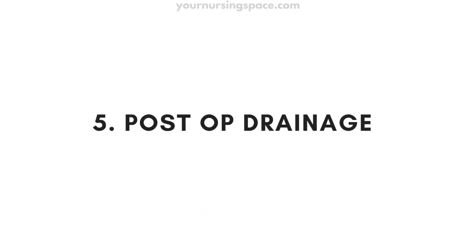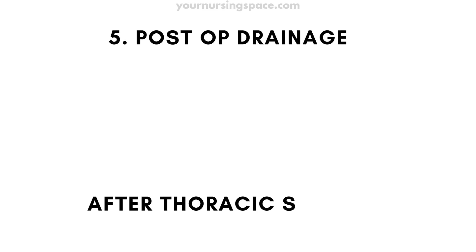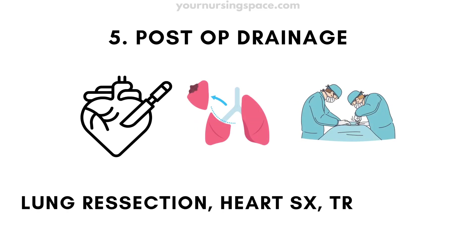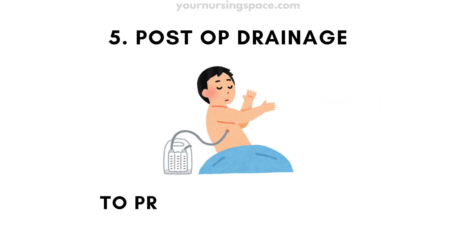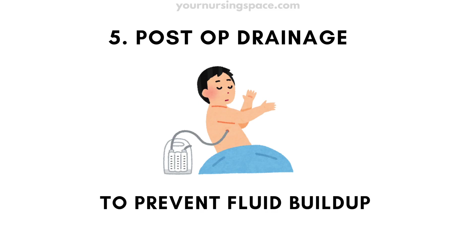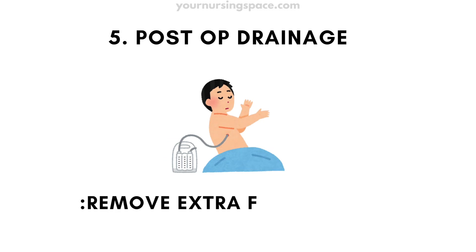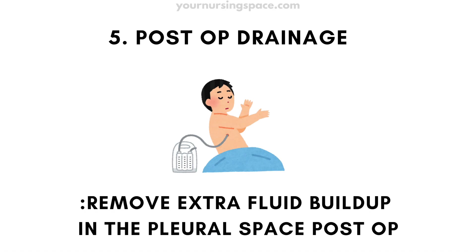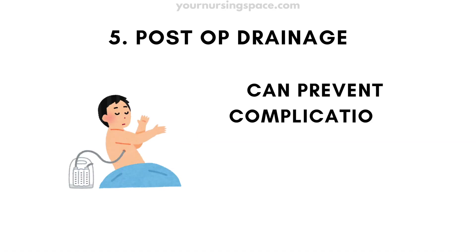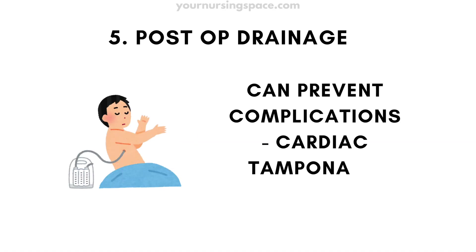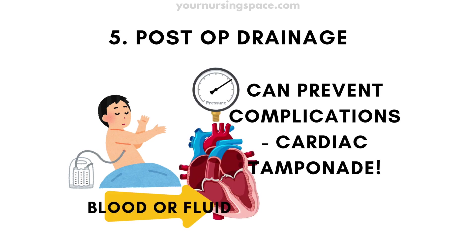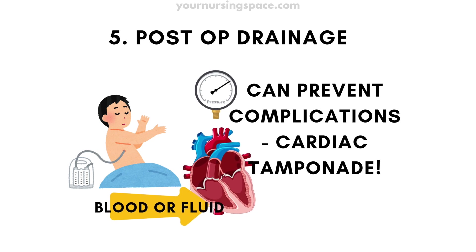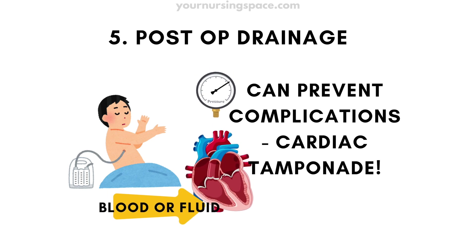Finally, post-operative drainage. After thoracic surgeries like lung resection, heart surgery, or trauma surgery, chest tubes are placed to prevent fluid buildup. Chest tubes remove extra fluid from the pleural space after surgery. This can prevent complications like cardiac tamponade, which is a cardiac emergency due to pressure on the heart from too much blood and fluid in the sac around the heart.